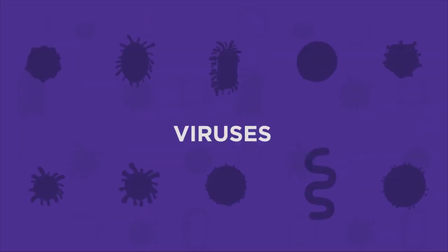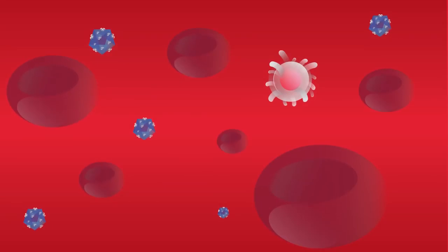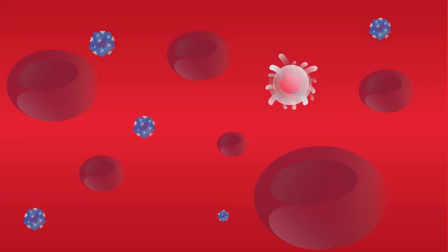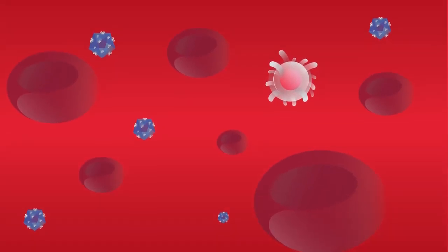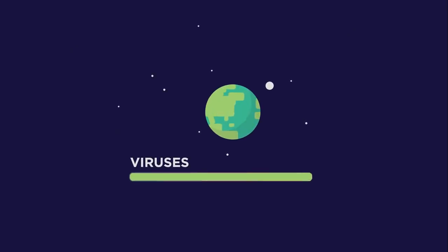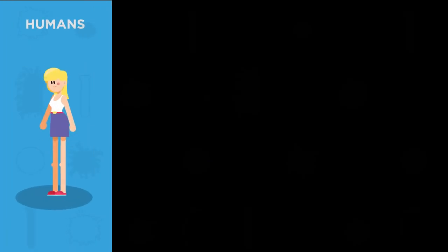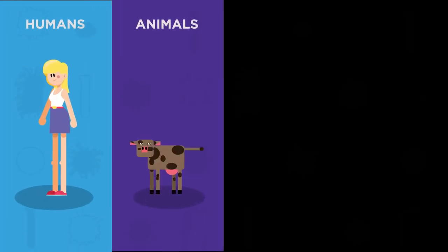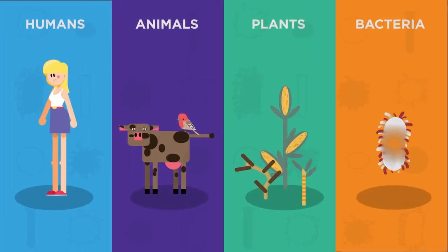They come in many different shapes and are present wherever there are cells to infect. In fact, viruses are the most common biological unit on earth, outnumbering all other types combined. Viruses can infect humans or animals, plants, and even bacteria.